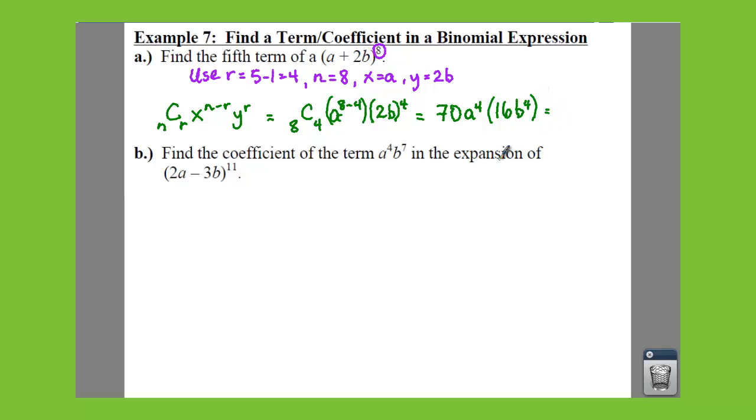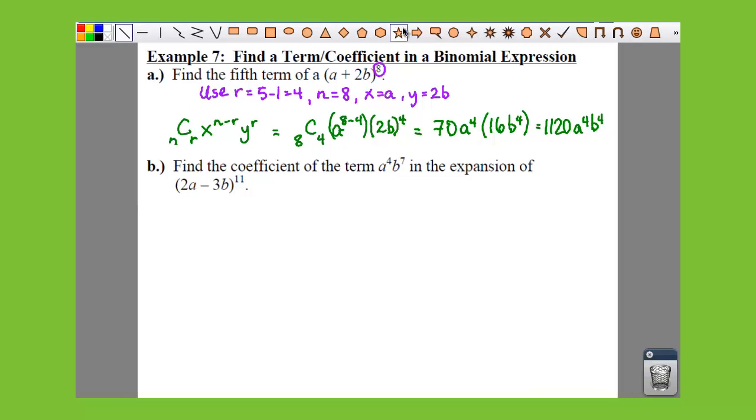And if we finally simplify it and just multiply all that through, that's going to give us 1,120 a to the 4th b to the 4th. So that is how you find your 5th term of your polynomial if you had to expand it.